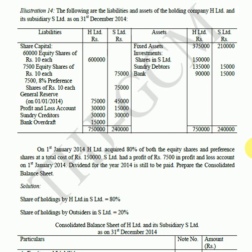We need to compute the dividend treatment. The dividend declared by S Limited needs to be distributed. 80% goes to the holding company and 20% goes to the outside shareholders. The 8% preference share dividend is also to be considered. The holding company's share of the dividend is adjusted in the profit and loss account.